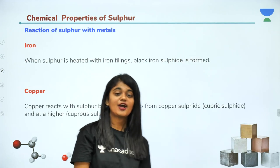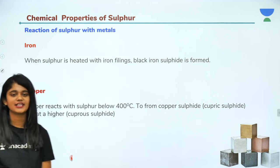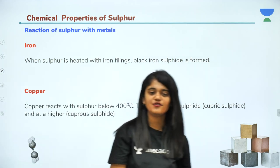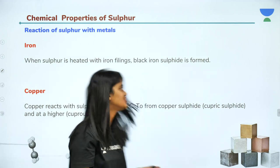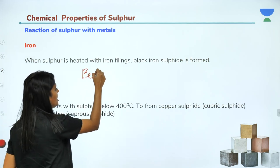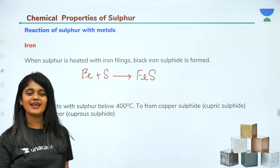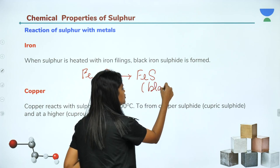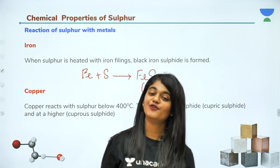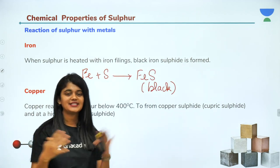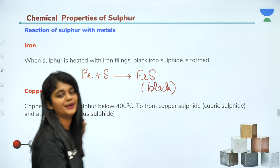The next metal is iron. When sulfur is heated with iron filings, black iron sulfide is formed. The reaction of iron with sulfur gives iron sulfide, and it is black in colour.